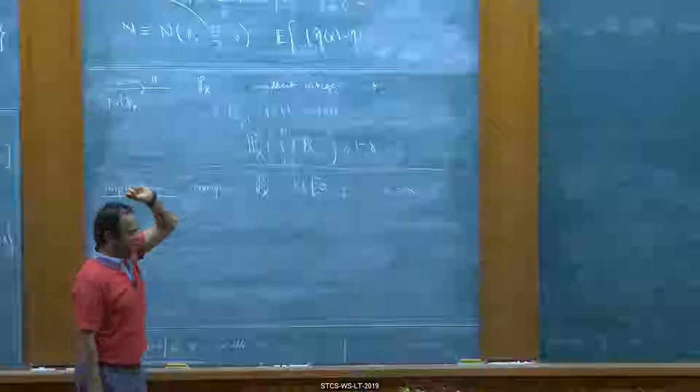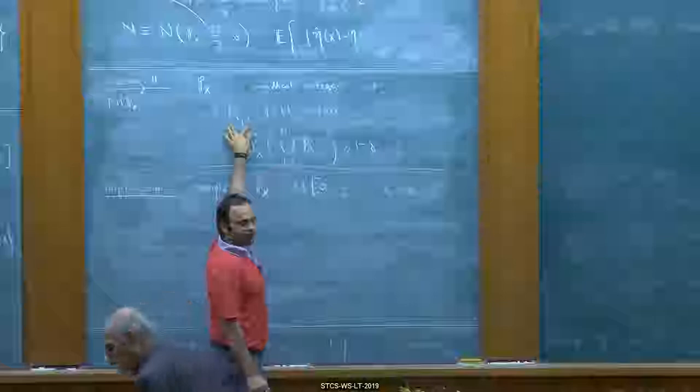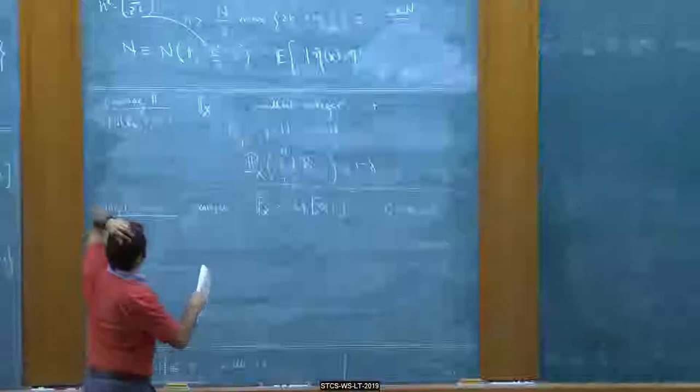Thank you for correcting me — the easier way to state it is: there exist N capital-N balls, each of radius R, centered at certain points, such that the probability of their union is at least one minus delta. And that's exactly the right way to write the definition.